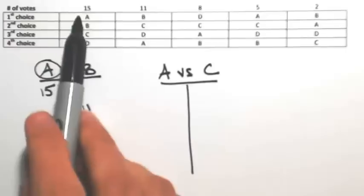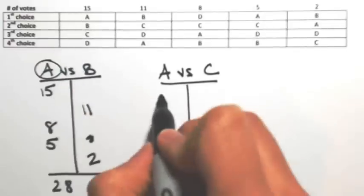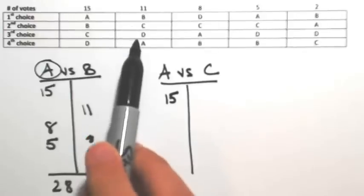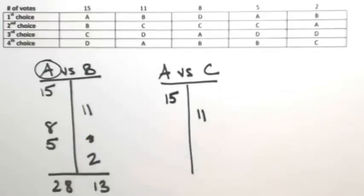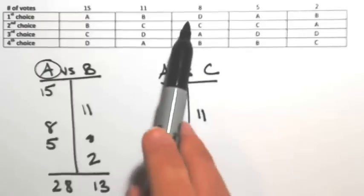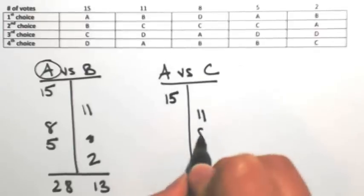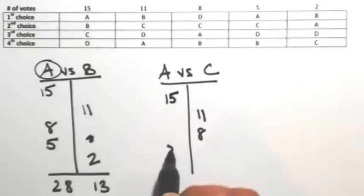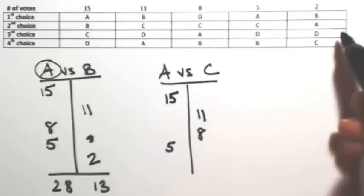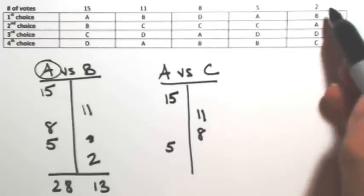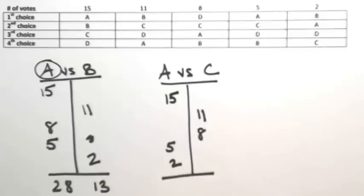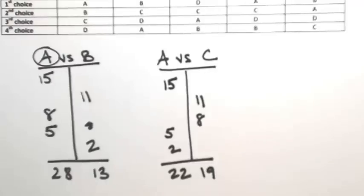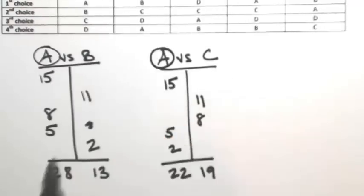And I do the same thing. So in the first column, A is preferred over C, so A gets 15 votes. In the second column, C is over A, so C gets 11. In the third column, C is over A, so C gets the 8 votes. In the fourth column, A is over C, so A gets 5. In the last column, A is over C, so A gets 2. So adding all this together, I get 22 for A and 19 for C. So again, A takes that competition.